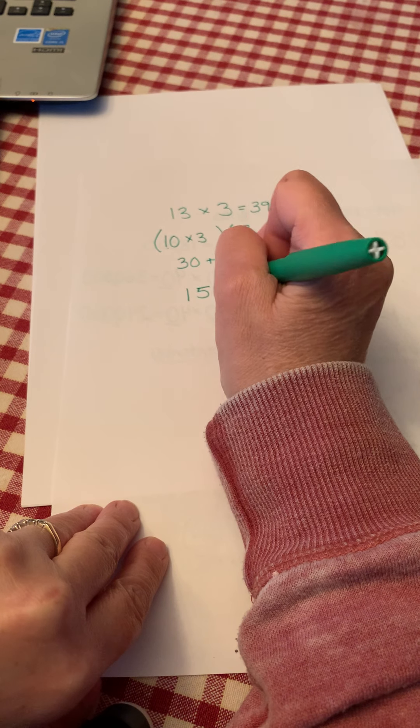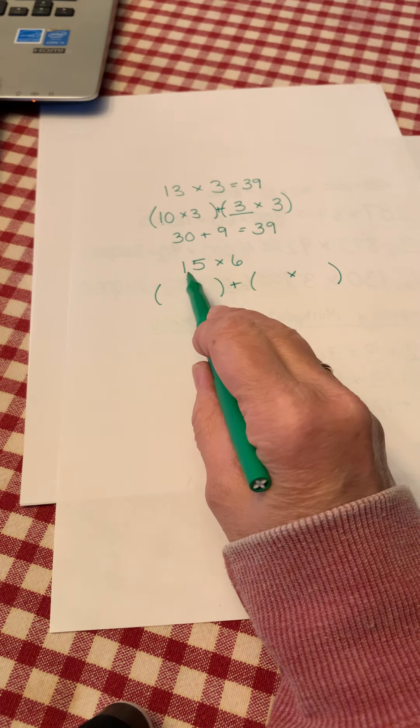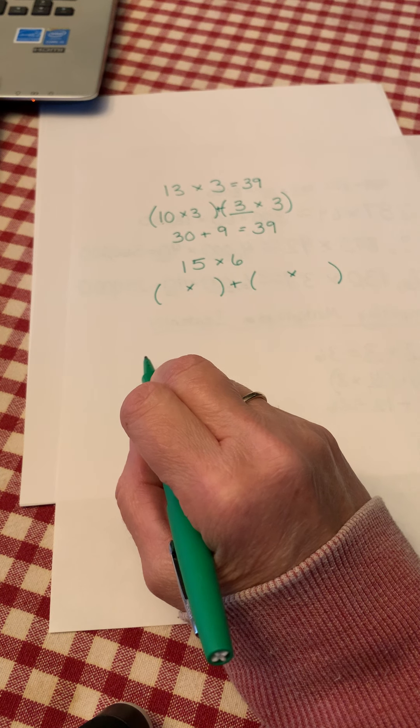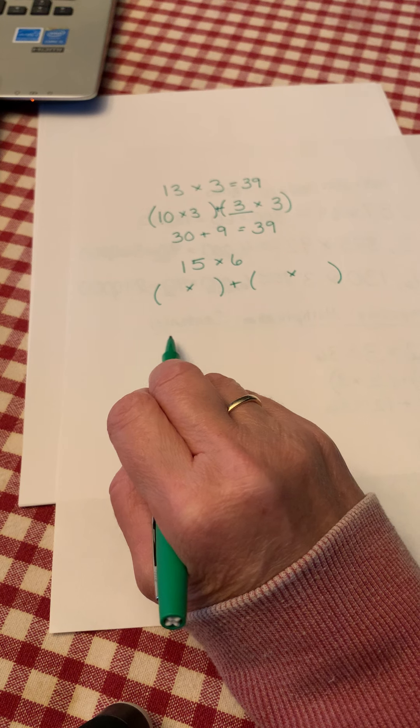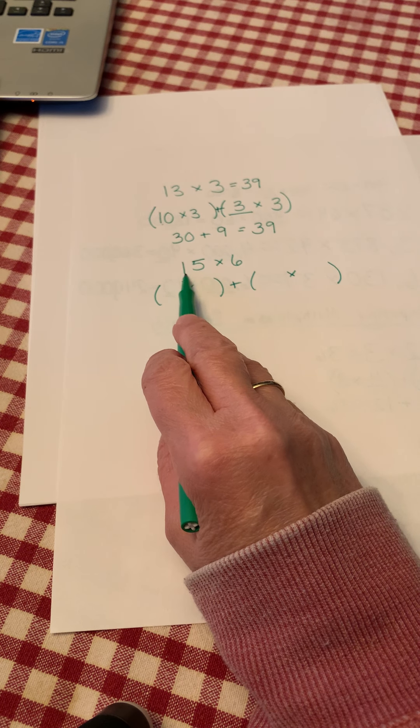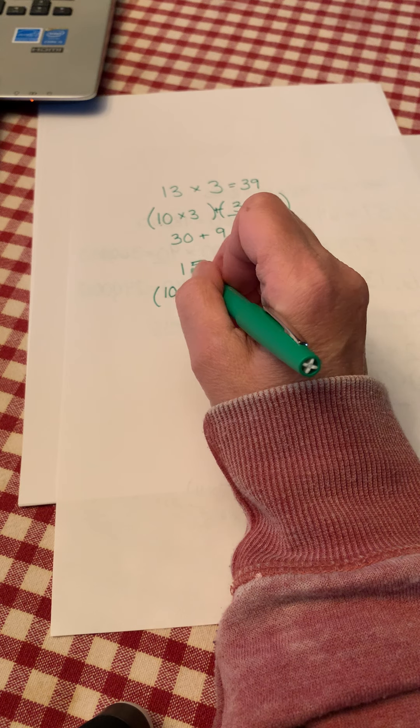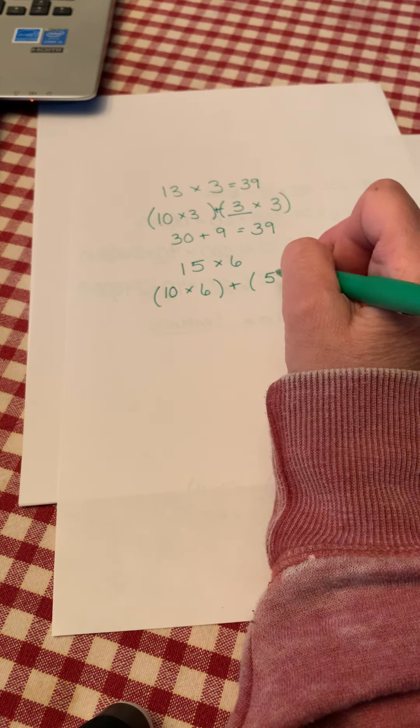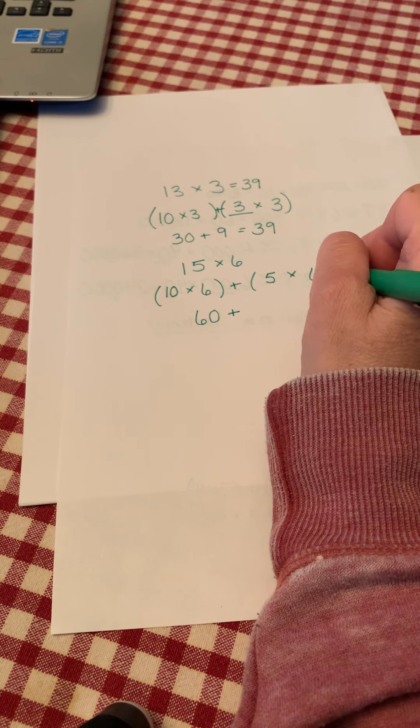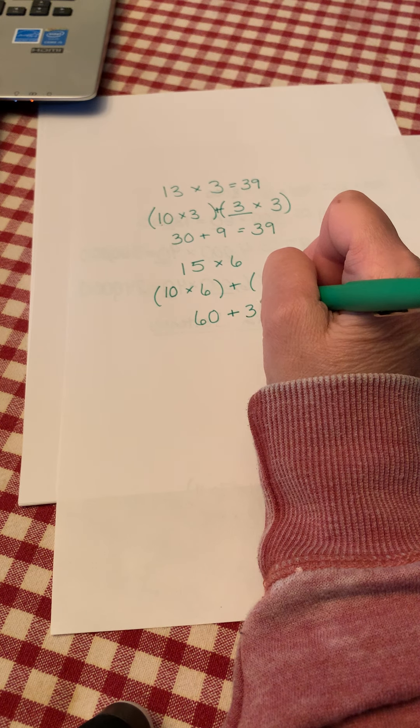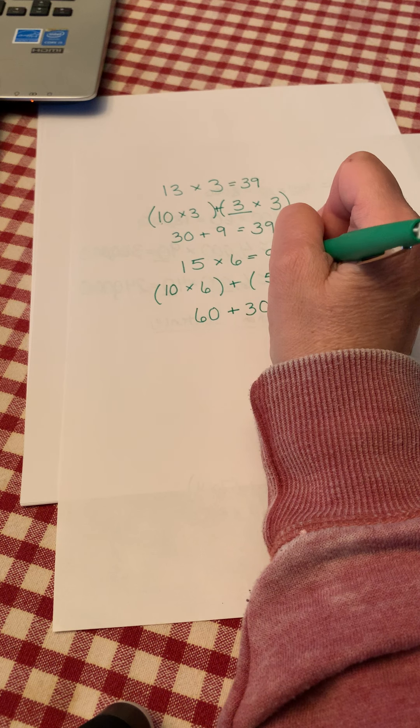All right, let's try one more. 15 times 6. What times what plus what times what can we use to solve 15 6s? Press pause, see if you can figure it out, and then press play when you are ready. All right, for this one I would break 15 into two numbers that I know, 10 and 5. 10 plus 5 is 15. 15 6s is equal to 10 6s plus 5 6s. 10 times 6 is 60 plus 5 times 6 is 30. 60 plus 30 is 90. 15 times 6 equals 90.